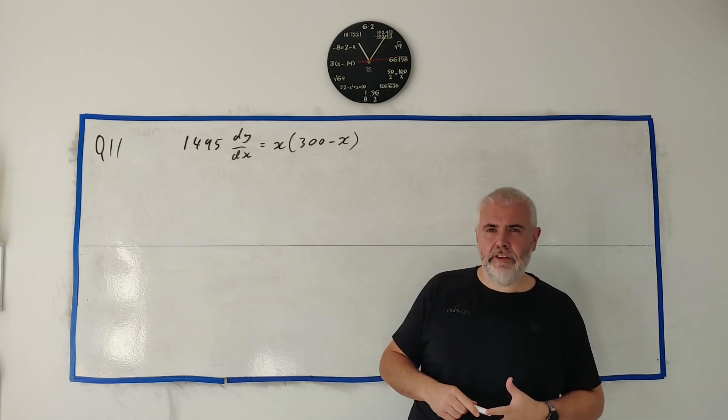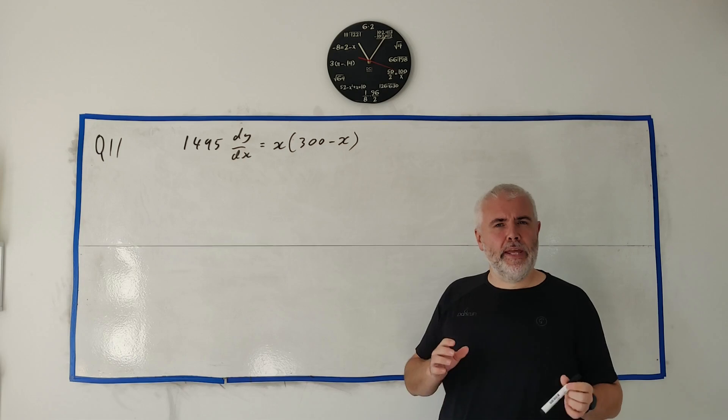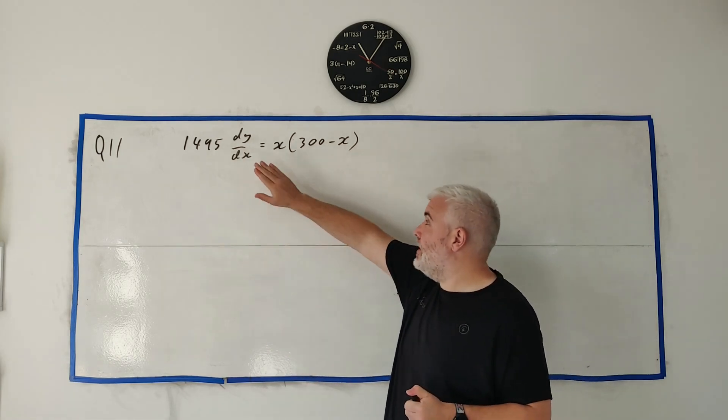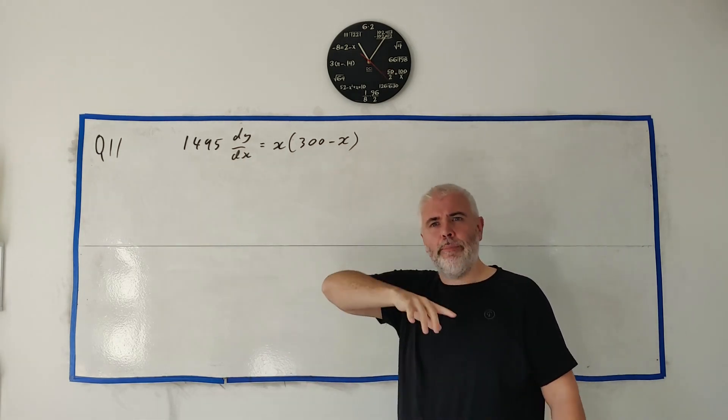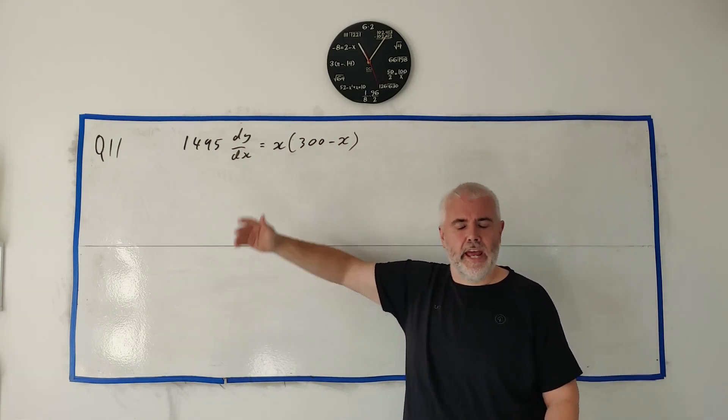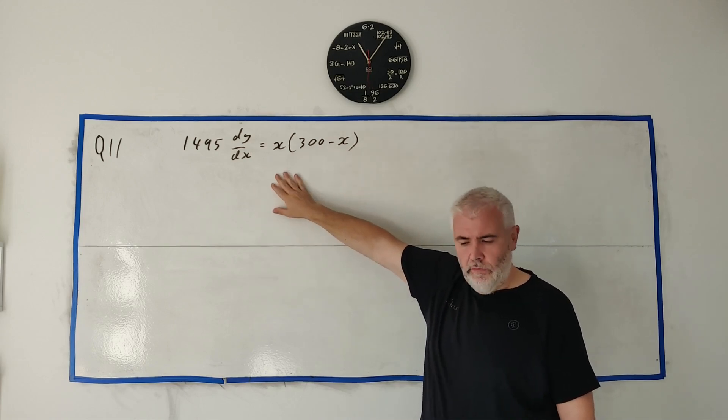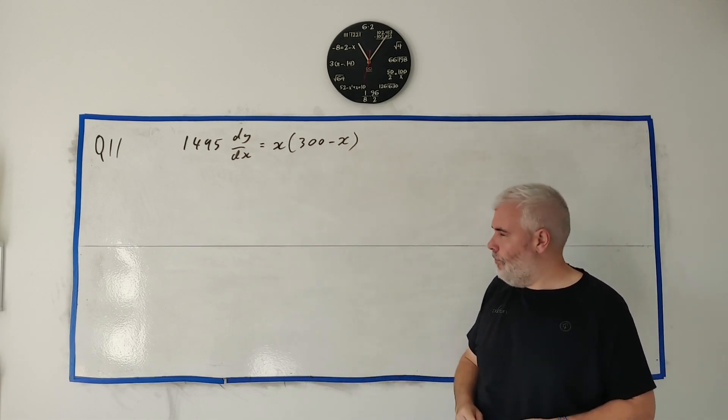In question 11, they give us a story which I'll read through in a moment. But basically, it comes down to giving us this differential equation. Now, part A is going to ask us to try and find this ourselves. But then after that, in part B, we're basically going to solve that. That will be the bigger part of the question.